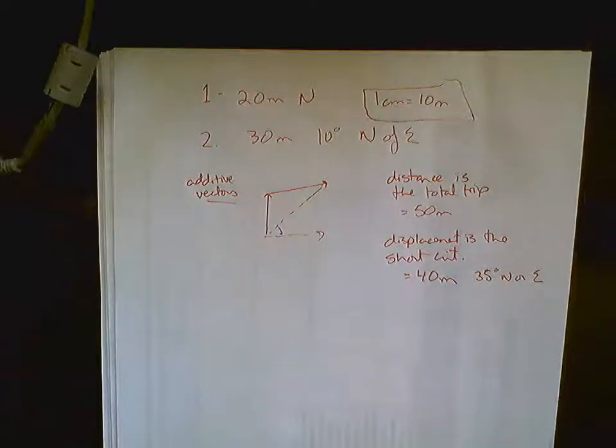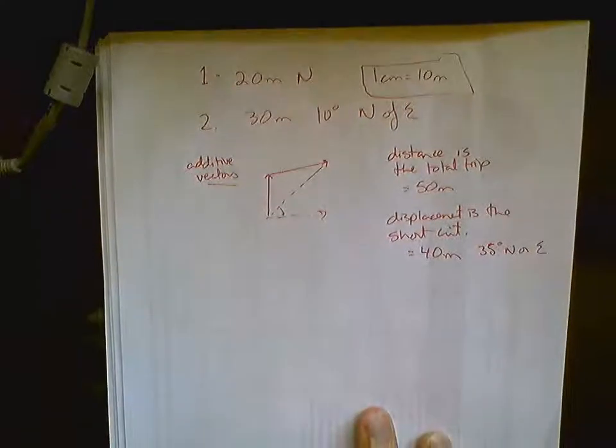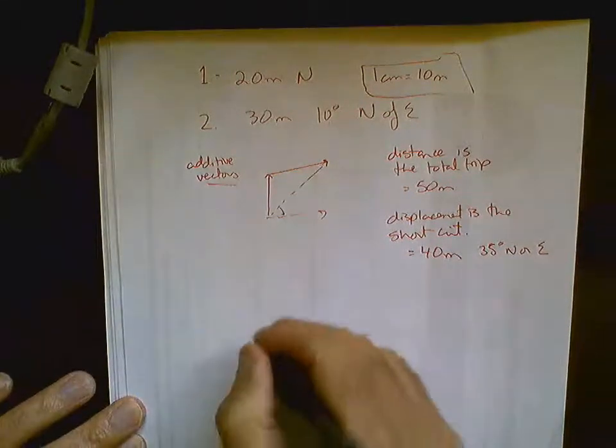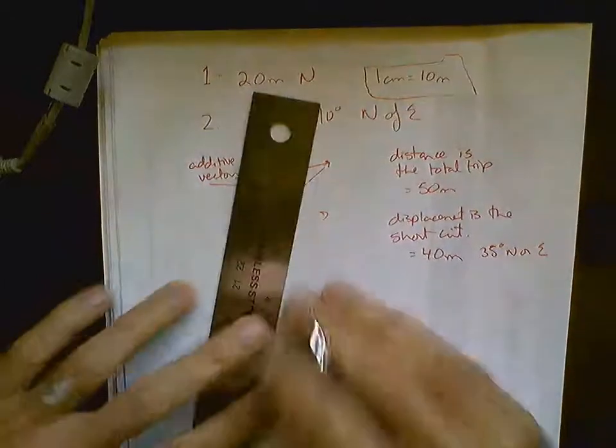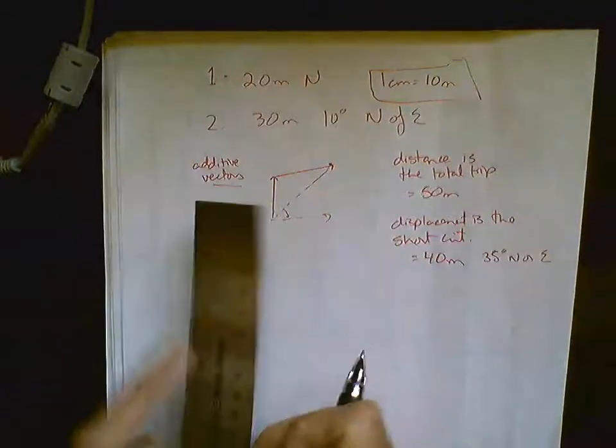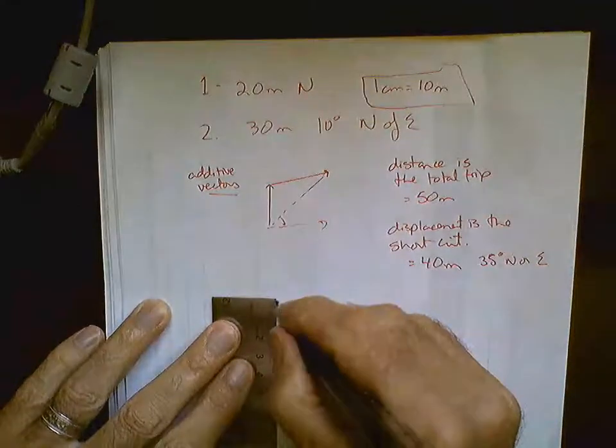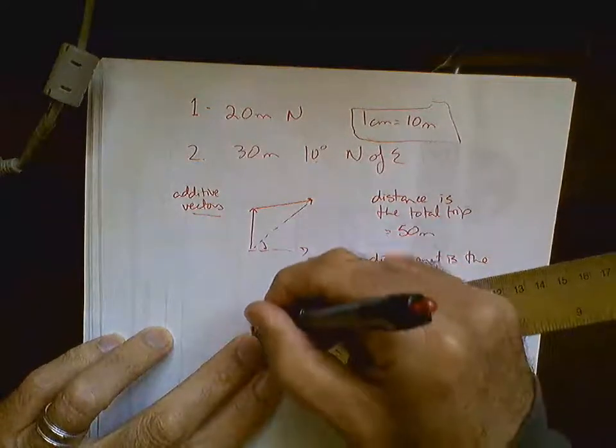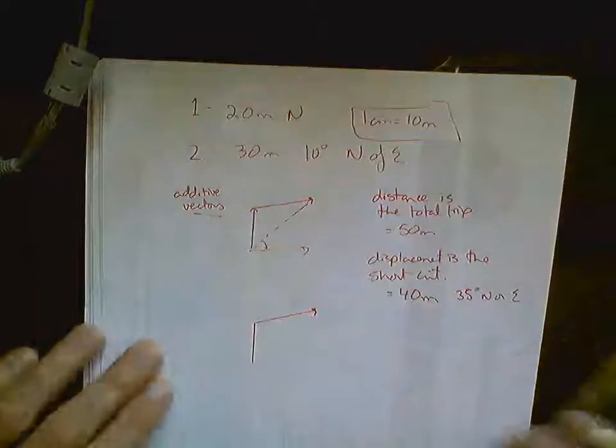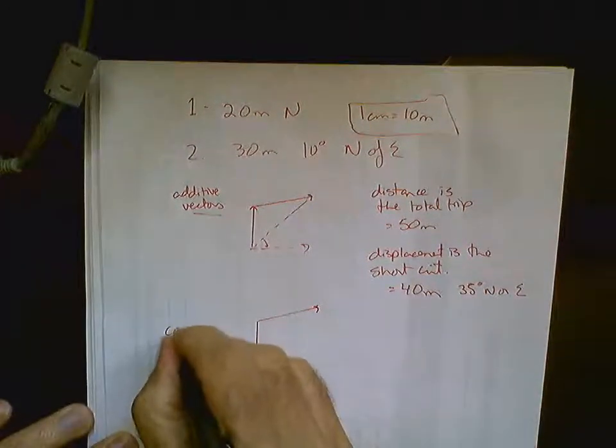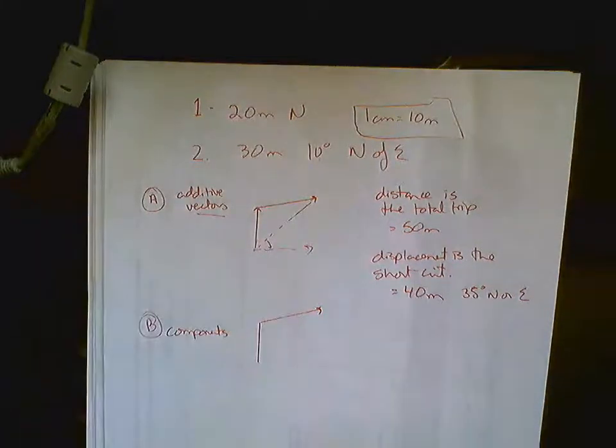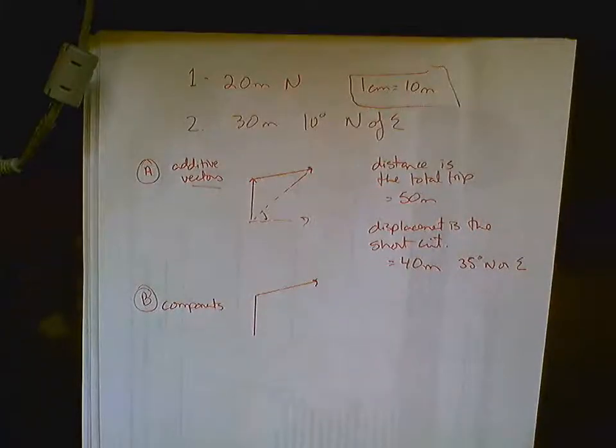There is a second method that you can use here to find your answer. And it takes a little longer to do. It gets you a more precise answer. So, what you could do is you could draw this. So, I'm going to draw out what I just did. And I'm going to split this up into components. So, this method is called components. Some of your assignments might tell you to do both. I say to pick one.